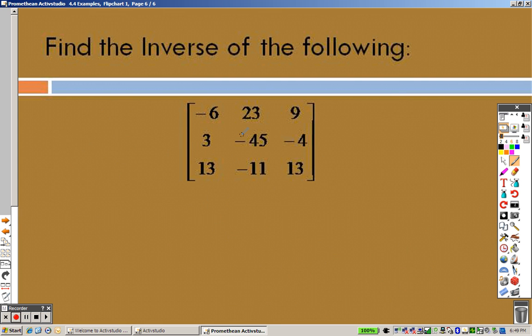So, do one more for you. Go to second, X to the negative 1 again. We're going to plug this one in for B. So, go to edit and go down to B. 3 by 3. Press negative 6, enter. 23, enter. 9, enter. 3, enter. Negative 45, enter. Negative 4, enter. 13, enter. Negative 11, enter. 13, enter. And go to second mode.